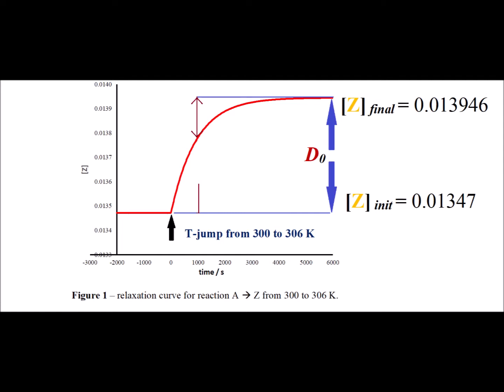We now examine the graph to find the point at which the red curve, the current concentration of Z, is such that the difference between it and the new equilibrium value at 306 degrees Kelvin is 1 over e of the way from Z initial to Z final.